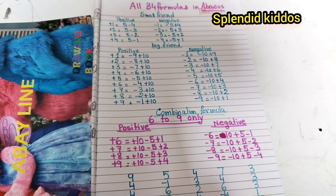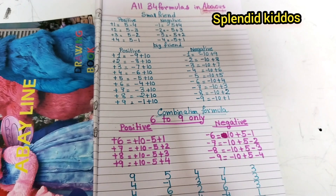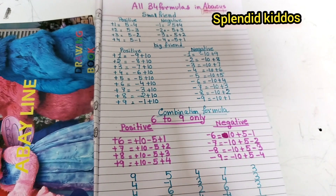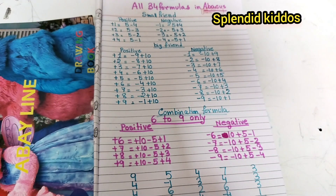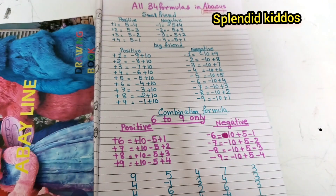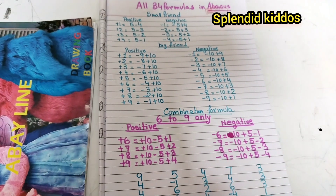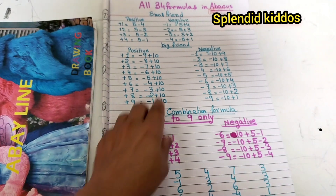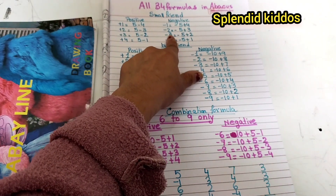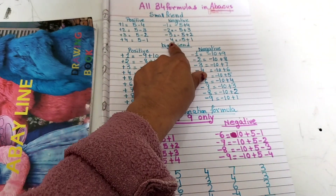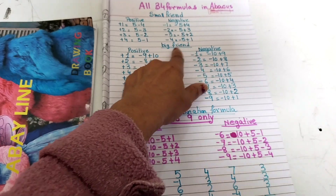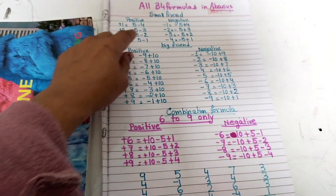In the small frame, positive and negative — the hash number is 5, so until 5 we calculate. Plus 1 equals 5 minus 4. Plus 2 equals 5 minus 3. Plus 3 equals 5 minus 2. Plus 4 equals 5 minus 1. For negative: minus 1 equals minus 5 plus 4, minus 2 equals minus 5 plus 3, minus 3 equals minus 5 plus 2, minus 4 equals minus 5 plus 1.